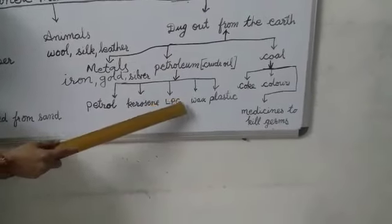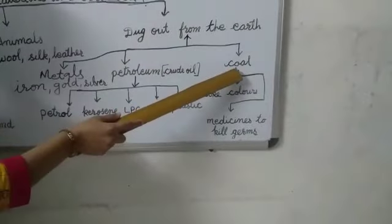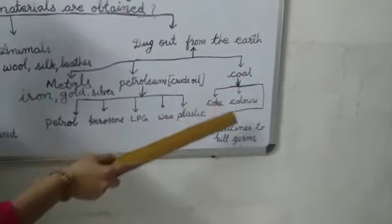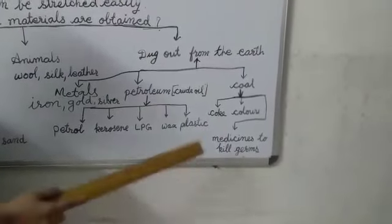When it is taken to the factory, petrol, kerosene, LPG, wax and plastic gets separated. Now, coal. Coal is also obtained from the earth. It is also present deep inside the earth. We get coke,